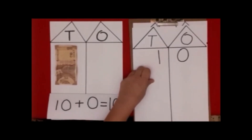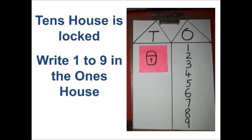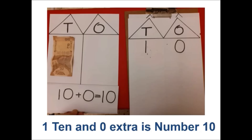Good children. When we wrote one to nine, they were all in the ones house because the tens house was locked. But when all of them went to the tens house for the party, we had one ten and zero ones — one group of ten objects. One ten, zero ones, zero extra is number ten. Thank you, bye-bye!